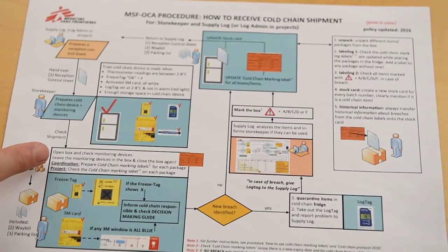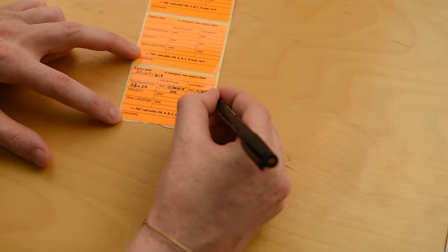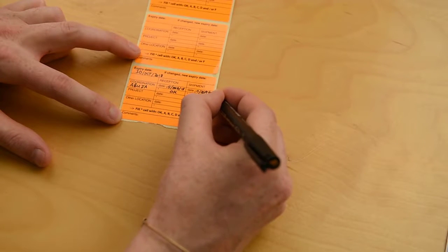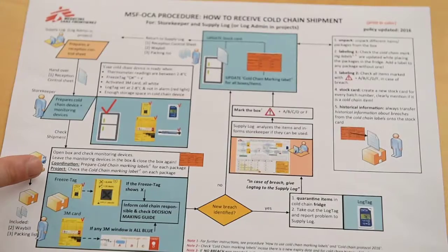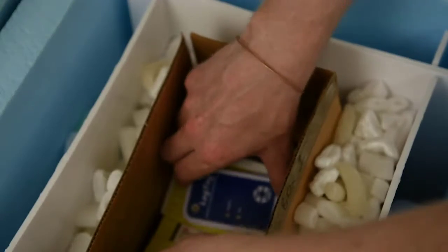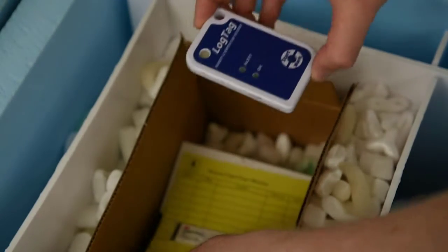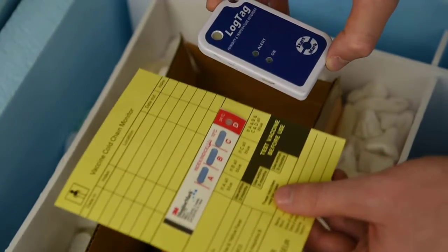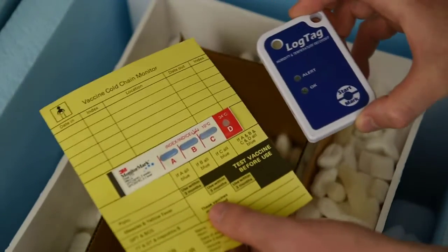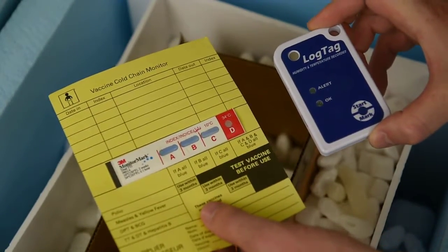At coordination we need to prepare a cold chain marking label for each item in the cargo. In the project we need to update the cold chain marking label when we do the reception. To do this we first need to check the monitoring devices in the transport box: the freeze tag, the 3M card, and the lock tag.